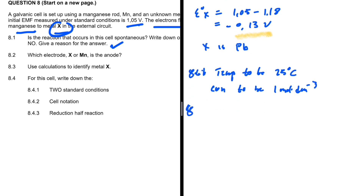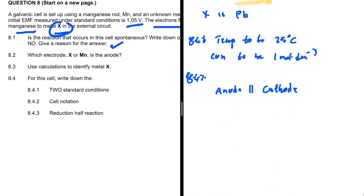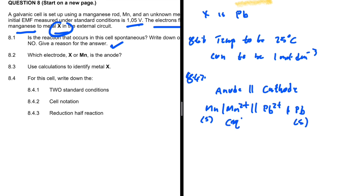For question 8.4.2, we need the cell notation. At the anode we have Mn, so we write Mn(s) | Mn²⁺(aq) followed by the salt bridge, then Pb²⁺(aq) | Pb(s) at the cathode. We can also indicate states and specify that the aqueous solution concentrations are 1 mole per decimetre cubed.